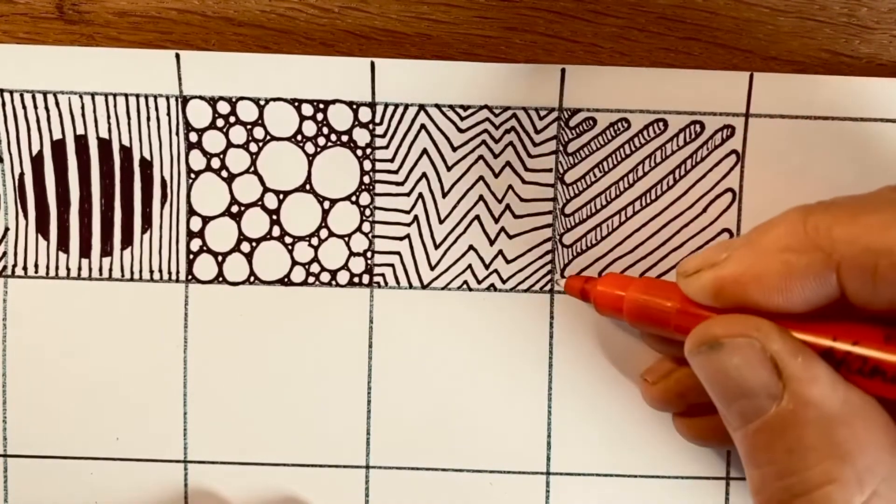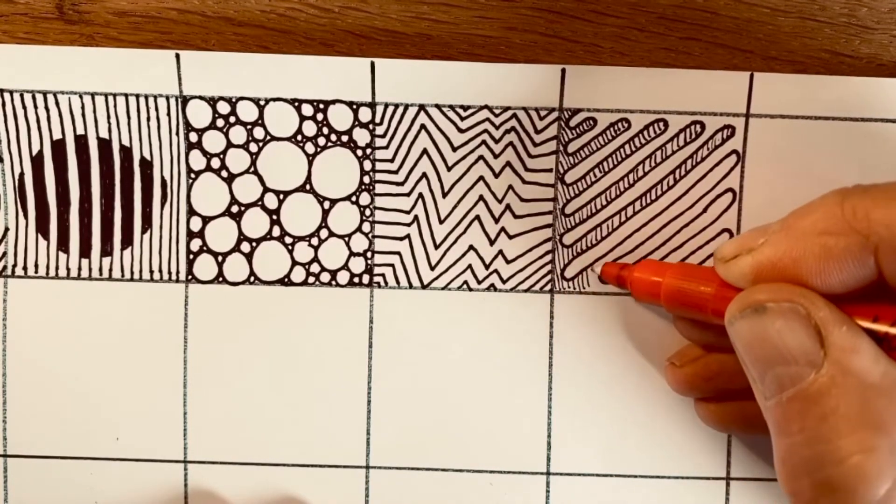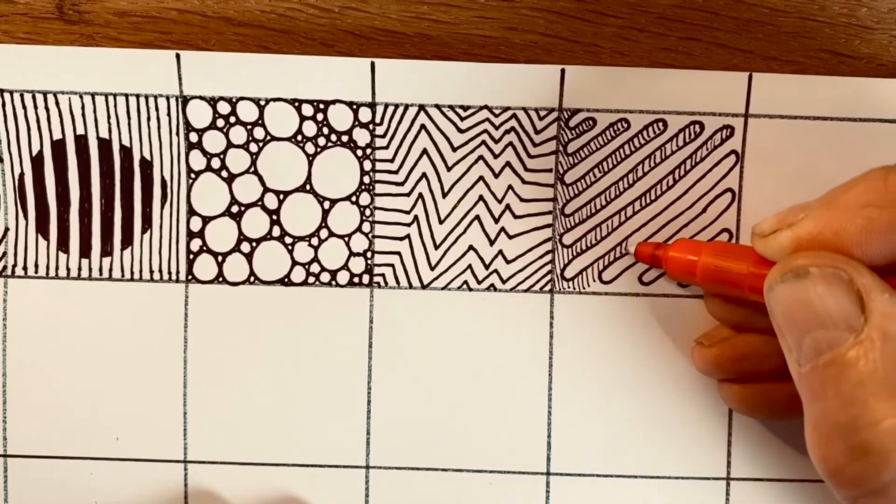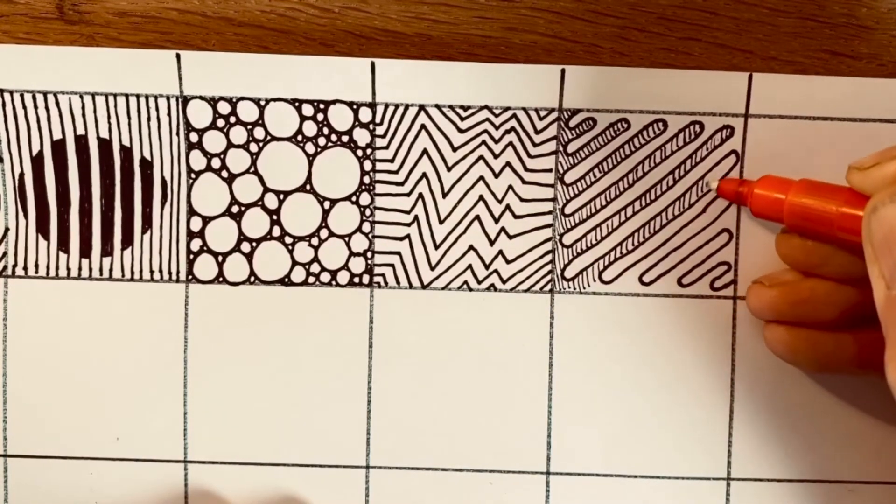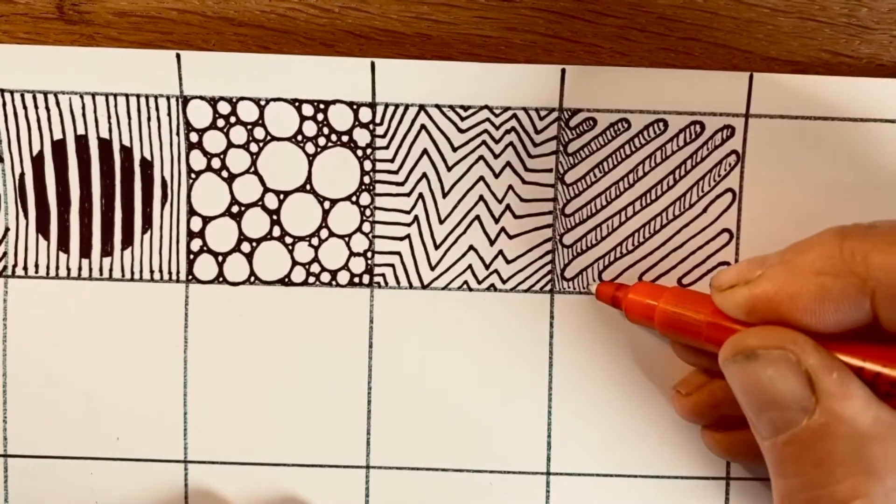If it feels messy don't worry. Just keep going. Use the same continuous style for your shading. Whether it's messy or not it will look good by the end because you've been consistent.